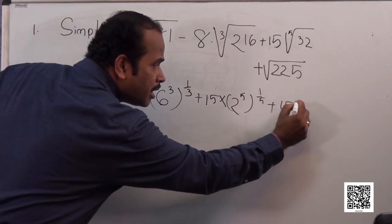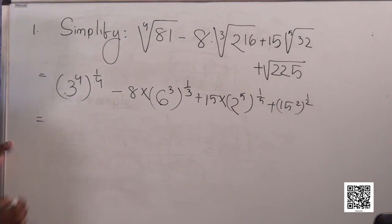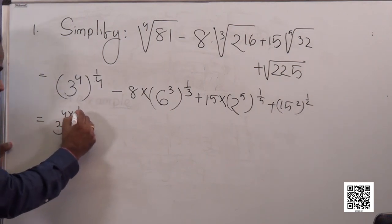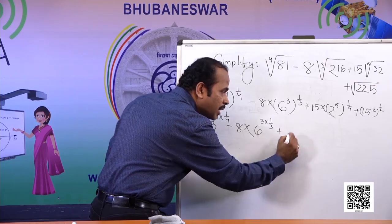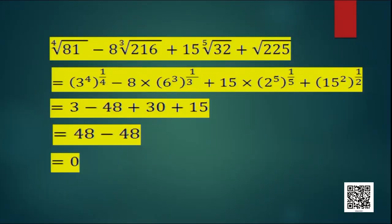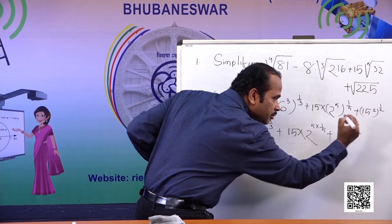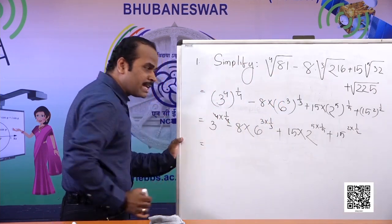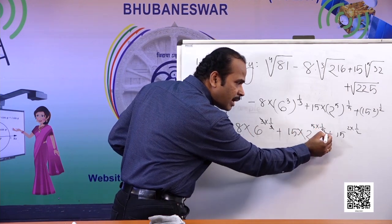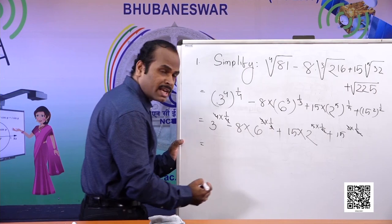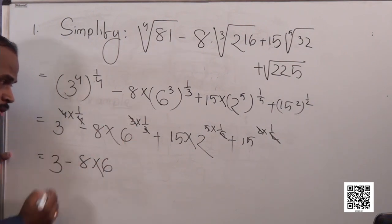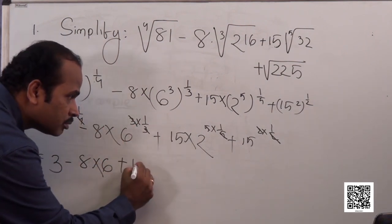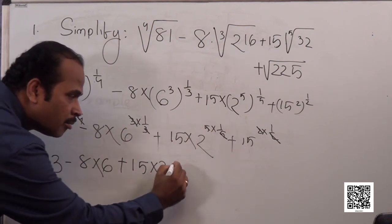Applying the power rule to each term: (3⁴)^(1/4) = 3¹ = 3; (6³)^(1/3) = 6¹ = 6; (2⁵)^(1/5) = 2¹ = 2; and (15²)^(1/2) = 15¹ = 15. So the expression becomes 3 minus 8 times 6, plus 15 times 2, plus 15.